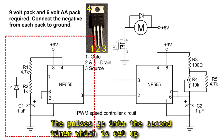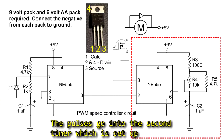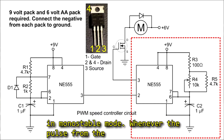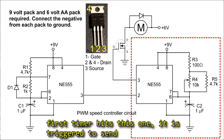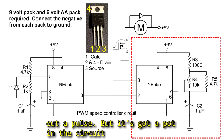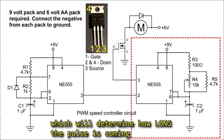The pulses go into the second timer, which is set up in monostable mode. So whenever the pulse from the first timer hits this one, it is triggered to send out a pulse. But it's got a pot in the circuit, which will determine how long that pulse is coming out.